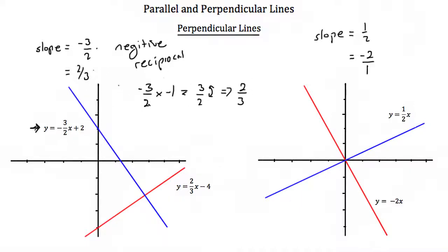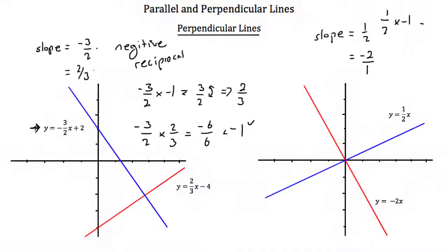There's another way to check this. If you have two lines and you know their slopes make them perpendicular, you can multiply the slopes together and they should always equal negative 1. So if we take negative 3 halves and multiply it by 2 thirds, we'll get negative 6 over 6, which is equal to negative 1 — so that works. For our second example, with slopes 1 half and negative 2 over 1: taking 1 half times negative 2 over 1 gives us negative 2 over 2, which again is equal to negative 1.